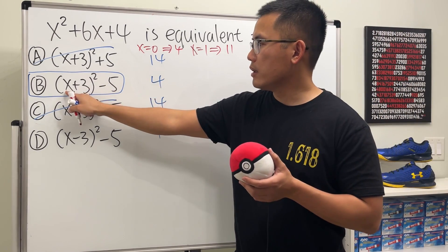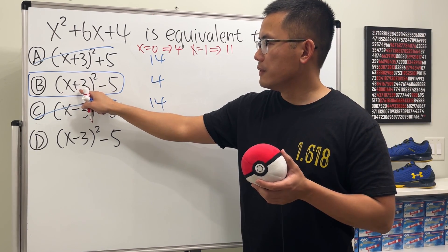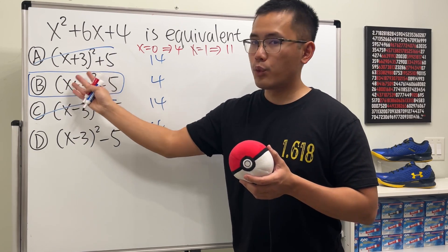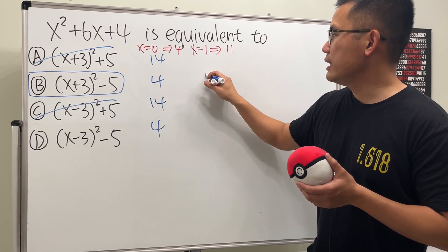And you see, if I put 1 in here, 1 plus 3 is 4. Square is 16. And then minus 5, we do get 11.